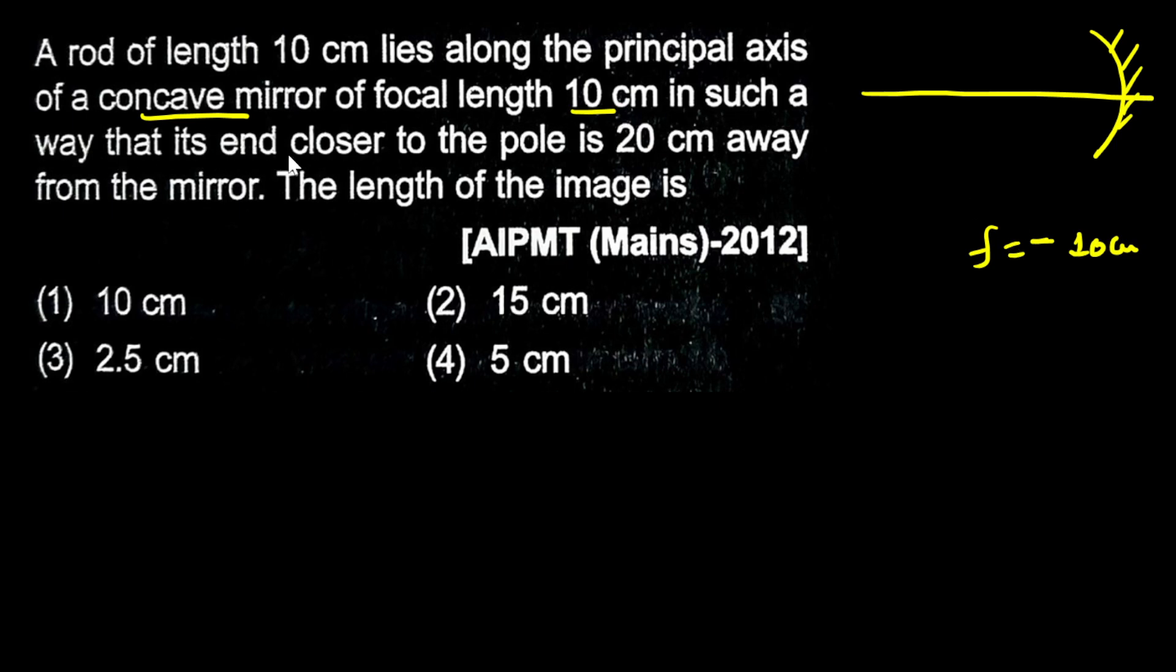The end of the rod closer to the pole is 20 cm away from the mirror. So this distance is 20 cm.